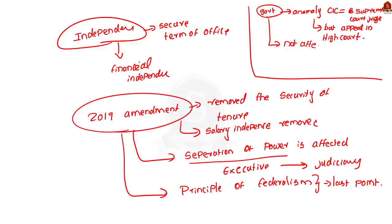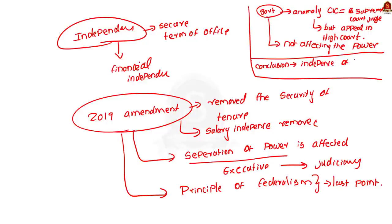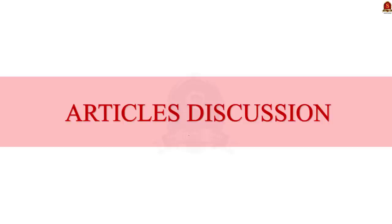Now let us see the conclusion part. You can mention that the success of the Right to Information Act lies in the independent functioning of the Information Commissions. The Right to Information Act gives power to common citizens to bring transparency and accountability in government functioning. The government must take steps to ensure the Information Commission's eminence and not take steps to dilute it. This is a well-balanced conclusion. Now we have discussed the answer holistically. Let us conclude the mains question discussion and take up the first news article.